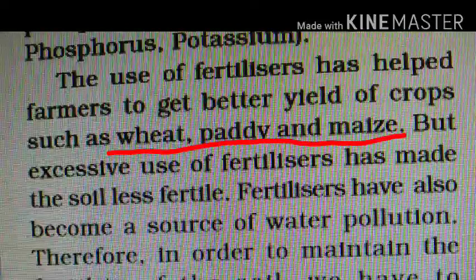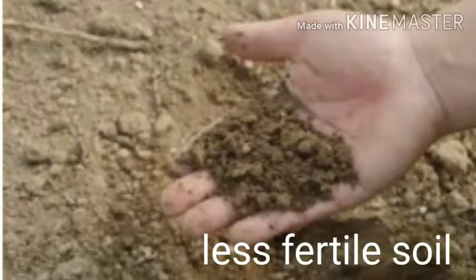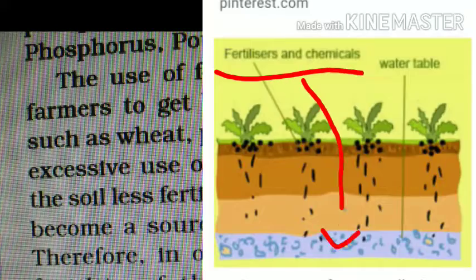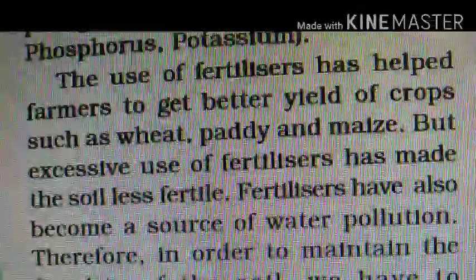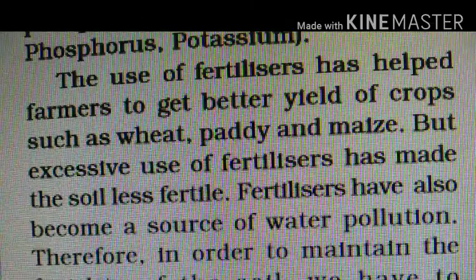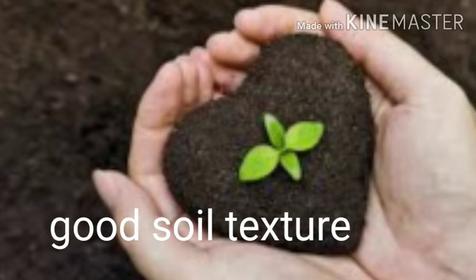But excessive use of fertilizers has made the soil less fertile. Fertilizers have also become a source of water pollution. Therefore, in order to maintain the fertility of soil as well as the quality of surrounding water, we have to substitute fertilizers with organic manures and leave the field uncultivated in between two crops. The use of manure improves soil texture as well as its water-retaining capacity, and it replenishes the soil with nutrients.